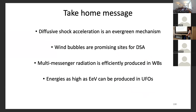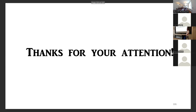Take-home message: diffusive shock acceleration is an evergreen mechanism realized everywhere in astrophysical environments. Wind bubbles at all scales — from stars to galaxies to AGN to starburst — are promising sites for DSA. We have multi-messenger radiation coming from these objects. And now you know that UFOs are not only aliens, but also ultra-fast outflows in AGN — and they could possibly be EeV accelerators.